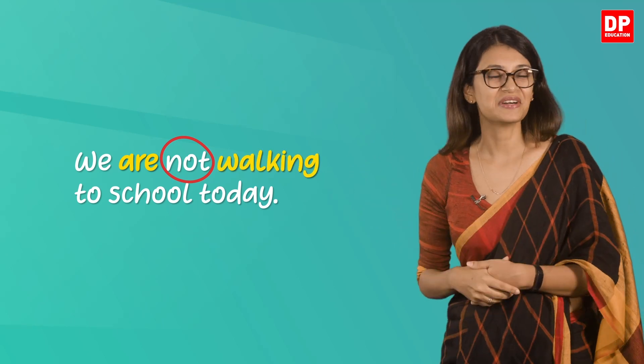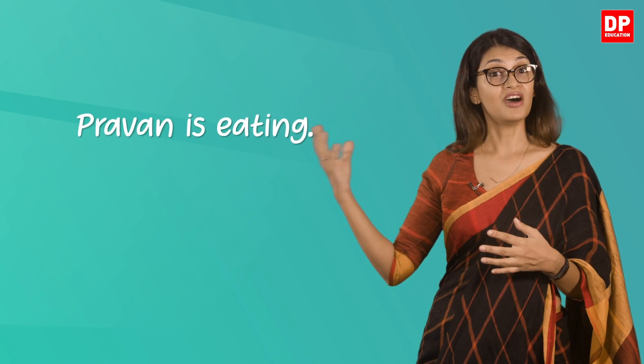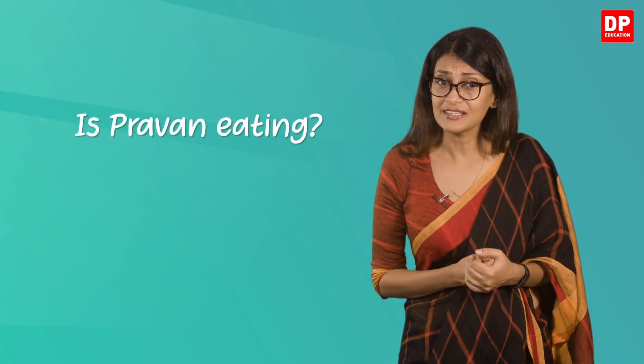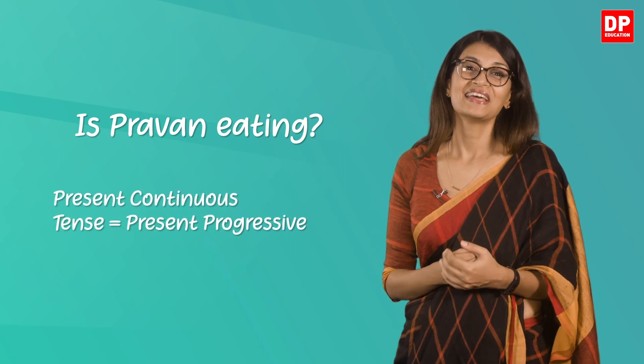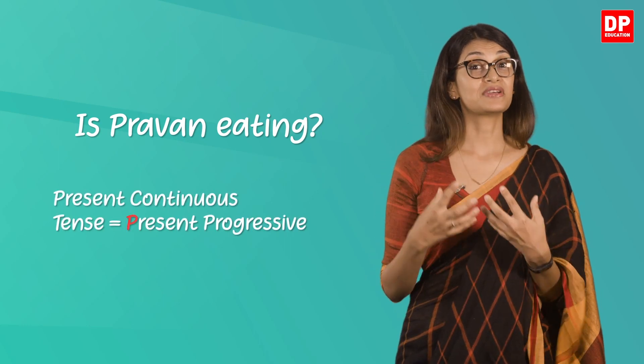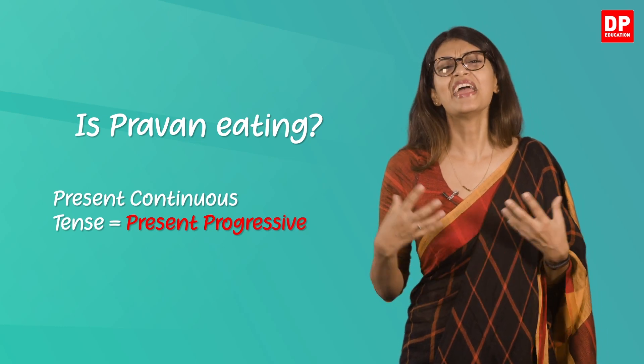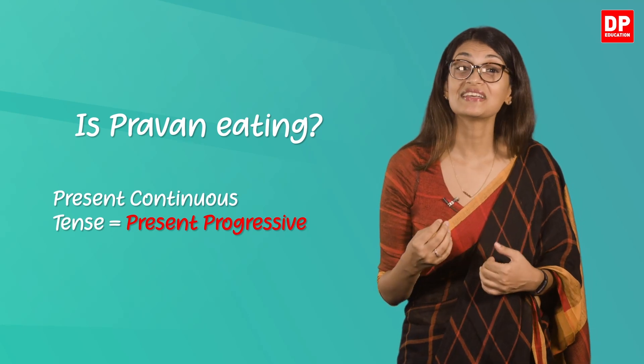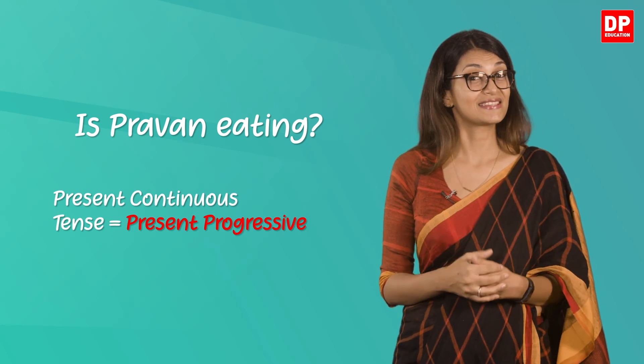Look at the example displayed on the screen: 'We are not walking to school today.' Notice where 'not' is placed — it is between the auxiliary verb and the main verb. For question sentences, we exchange the subject and the auxiliary verb, so a simple sentence like 'Pravan is eating' becomes 'Is Pravan eating?' The present continuous tense, also known as the present progressive, adds energy and action to writing and helps readers understand exactly when the action takes place.